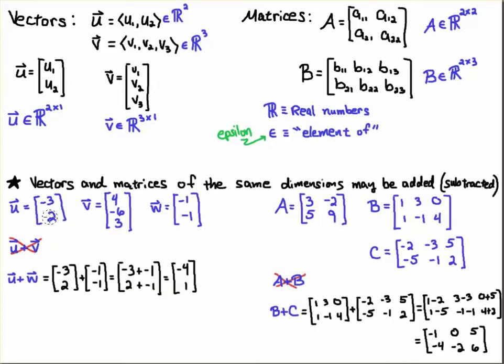Now I cannot add u plus v because they have different dimensions, but I can add u plus w. And the way that we would add u plus w is just by simply adding the components of the vector, or if you want, you can think of those entries.